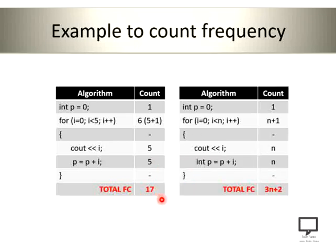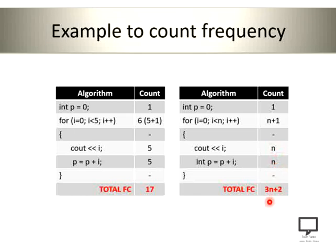If I replace 5 by n, then in terms of n, what will be the frequency count for the same algorithm? The first statement gets executed once. The for loop gets executed n+1 times. The inner statements get executed n times each. So the total frequency count is 3n + 2.